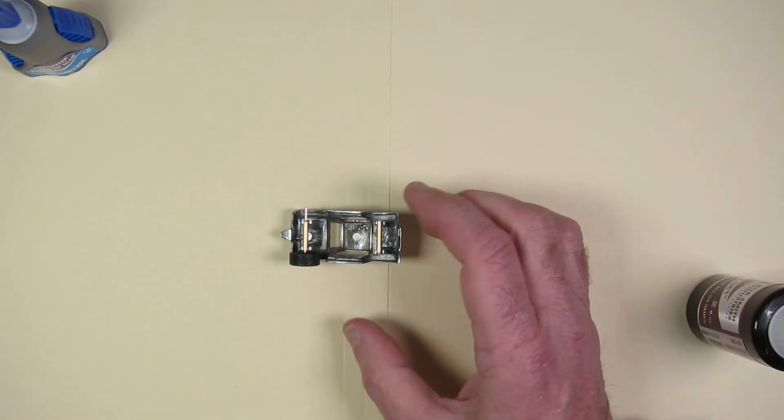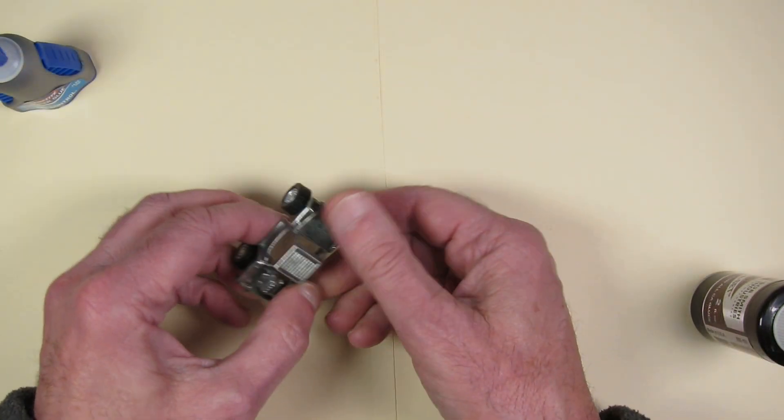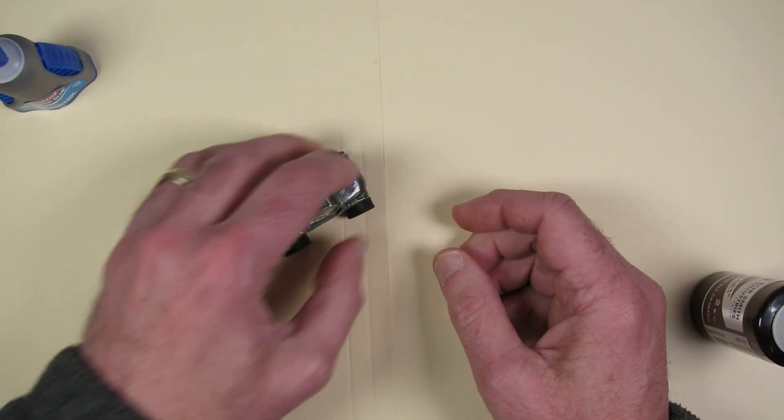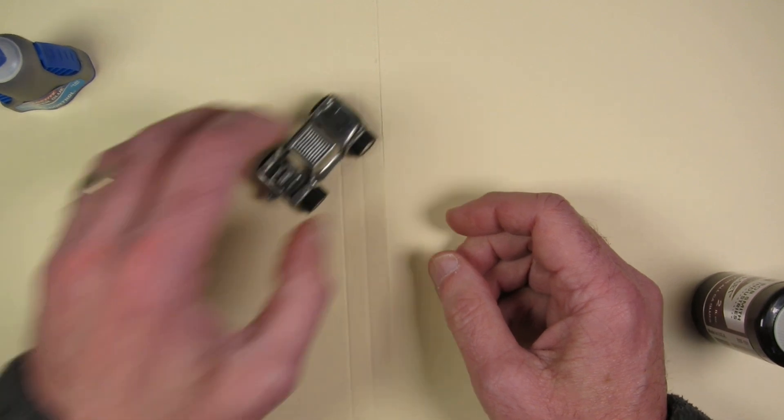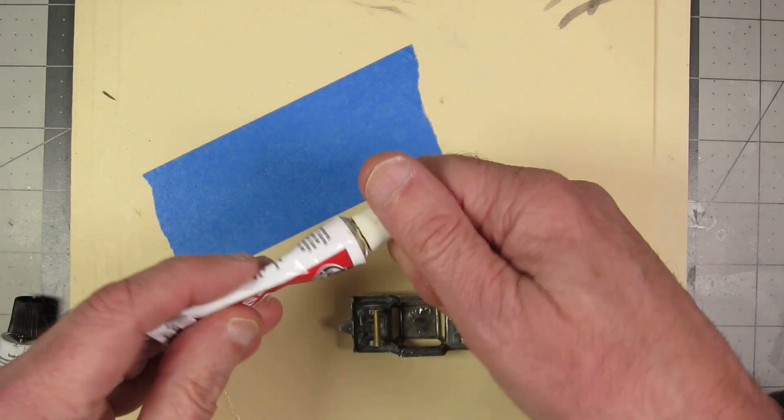You did see the JB Weld, or you will see the JB Weld come out in this build. Once I had those tacked down, the axle tubes tacked down and in place.